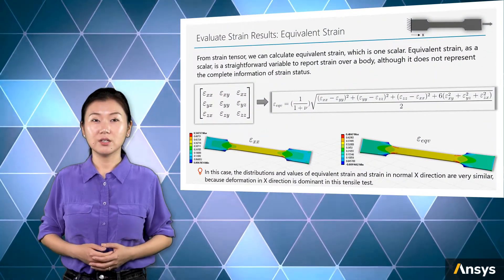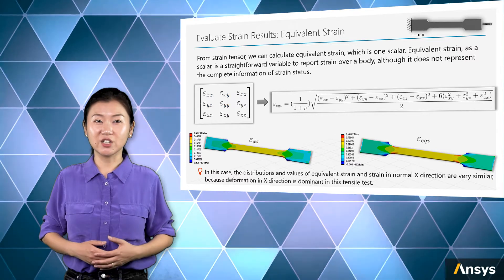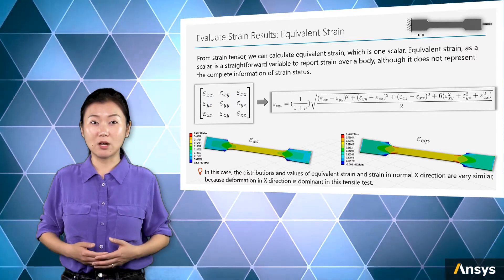If we don't want to review the strain components one by one, we can calculate the equivalent strain from the strain tensor. Equivalent strain is a scalar and it is a straightforward quantity to report strain results.